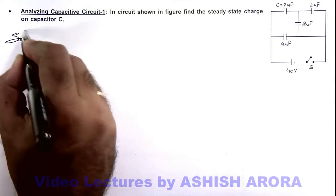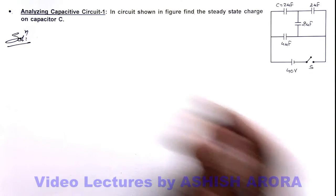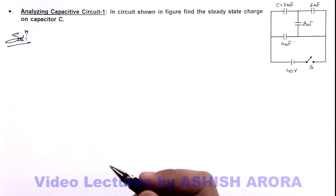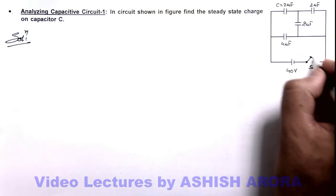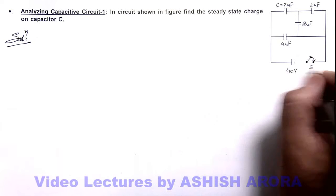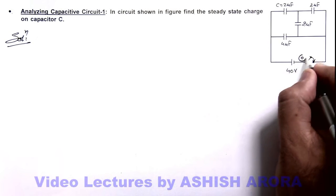We solve it by the standard method of distribution of potential and nodal analysis. If we close down the switch we can take on the right hand side of battery the potential as reference to be zero. On the left hand side which is high potential side the potential as reference is 40 volts.